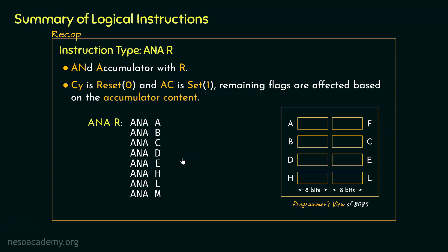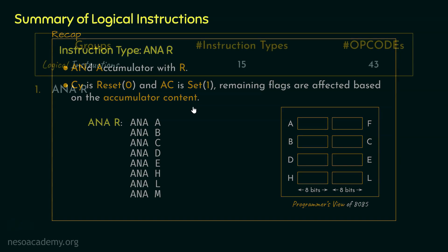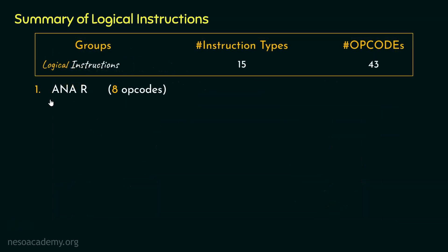When performing AND, the carry flag is to be reset and the auxiliary carry flag is going to be set. The remaining flags are to be affected based on the content of the accumulator. So for the instruction type ANAR, we have 8 different opcodes.